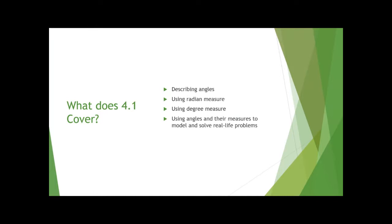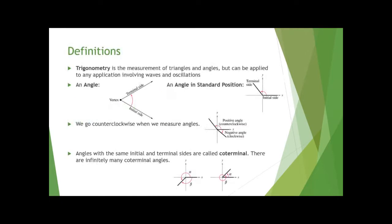4.1 covers describing angles using radian measure, using degree measure, and using angles and their measures to solve real-life problems. Trigonometry is the measurement of triangles — that's what the name comes from — but it also involves measuring angles, usually formed based off of triangles. We've found that oscillations like waveforms also use trigonometry, so it's more than just triangles. It's really two areas: triangle applications (more geometry) and calculus applications involving sine and cosine waves.